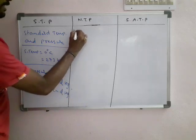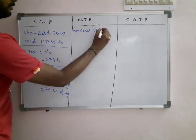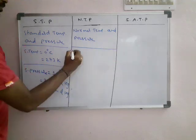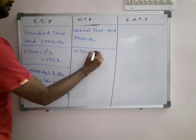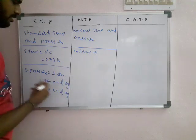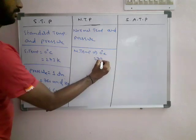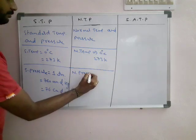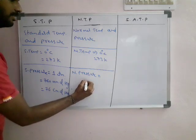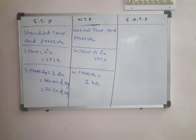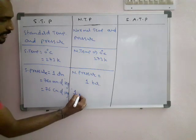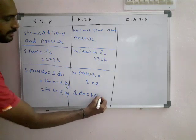Now for NTP — Normal Temperature and Pressure. The normal temperature is the same: 0 degrees Celsius or 273 Kelvin — nothing changes there. But the normal pressure is 1 bar. So in NTP we measure pressure in bar. There is a small difference between 1 bar and 1 atmosphere: 1 atmosphere is equal to 1.01 bar.